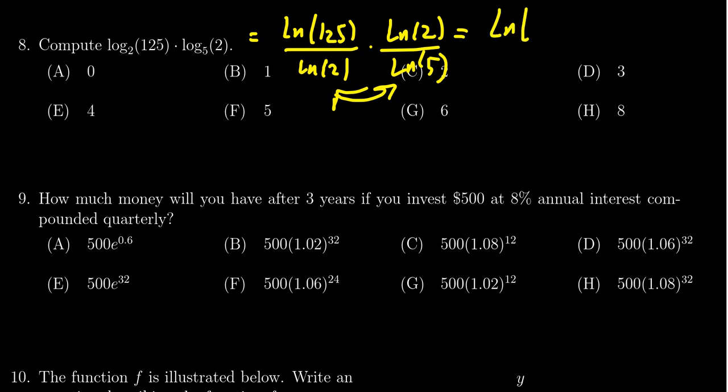We get the natural log of 125 over the natural log of 5, multiplied by the natural log of 2 over the natural log of 2. Notice that those cancel out entirely, and we're left with the natural log of 125 over the natural log of 5.